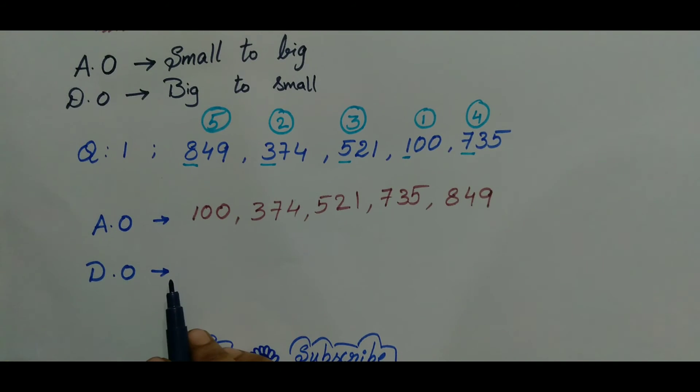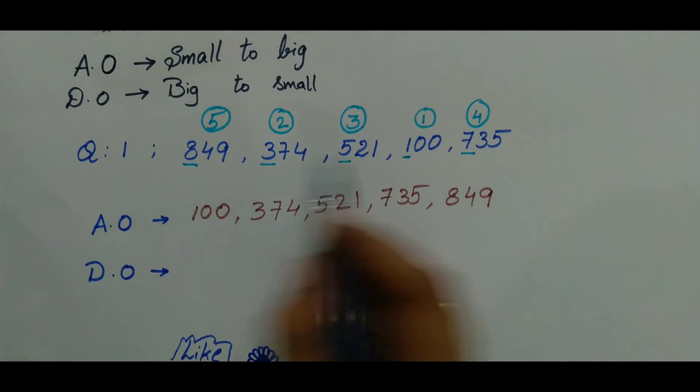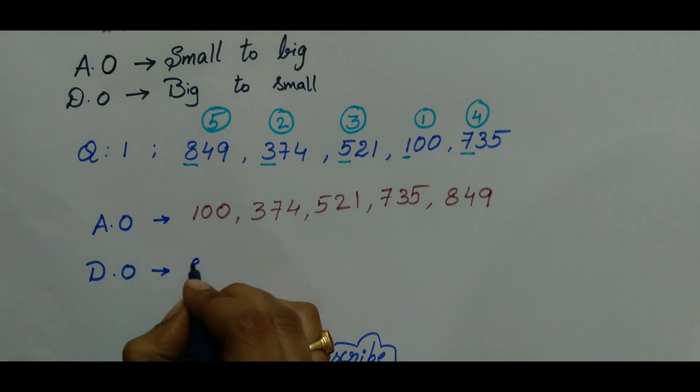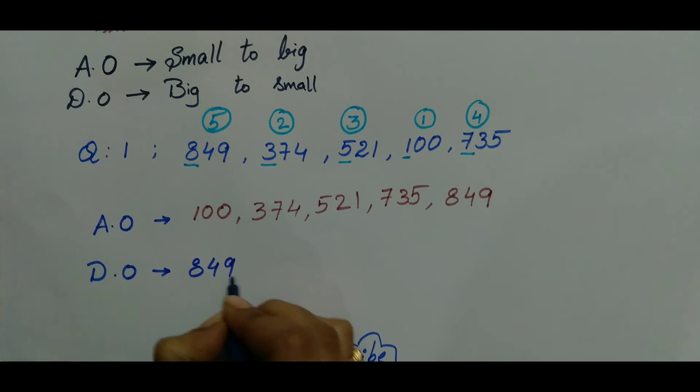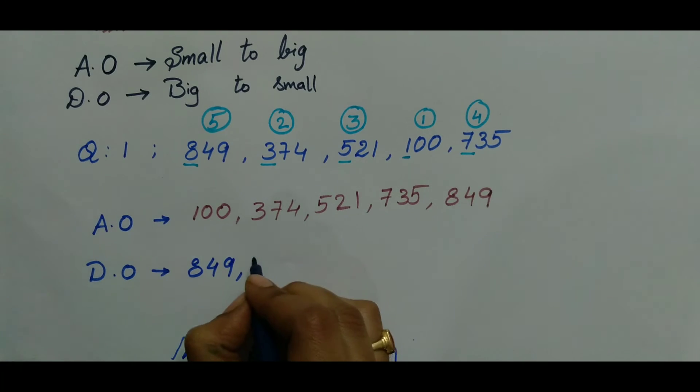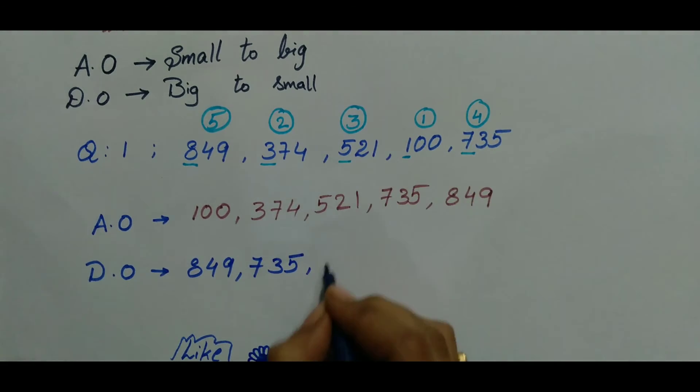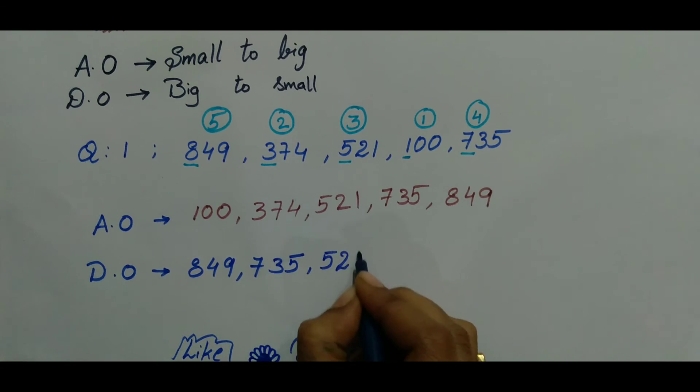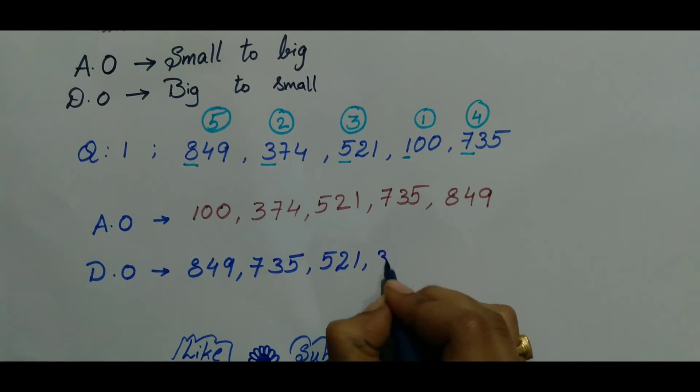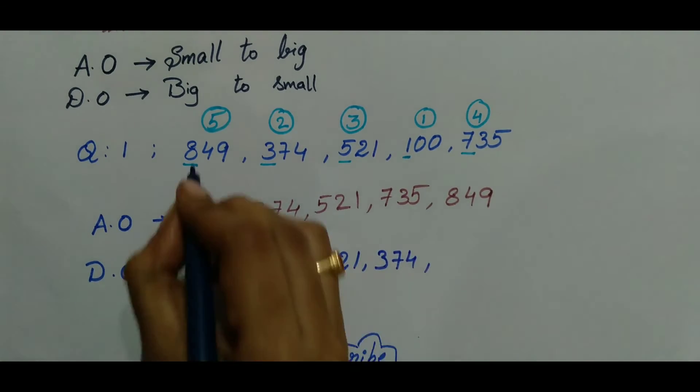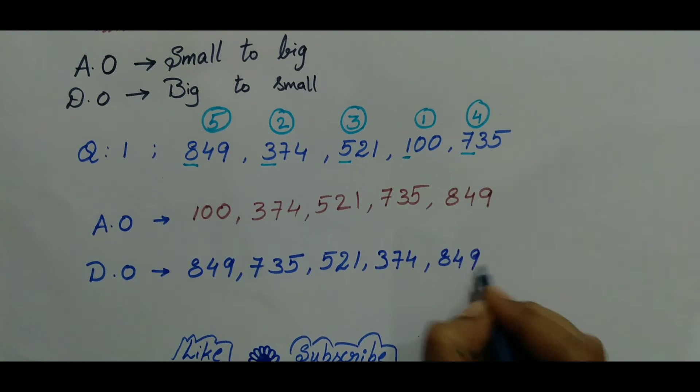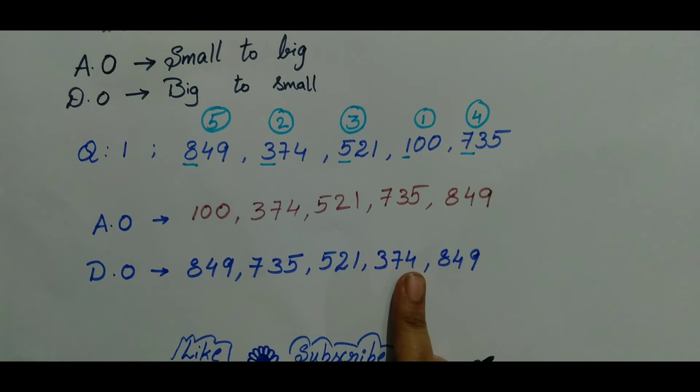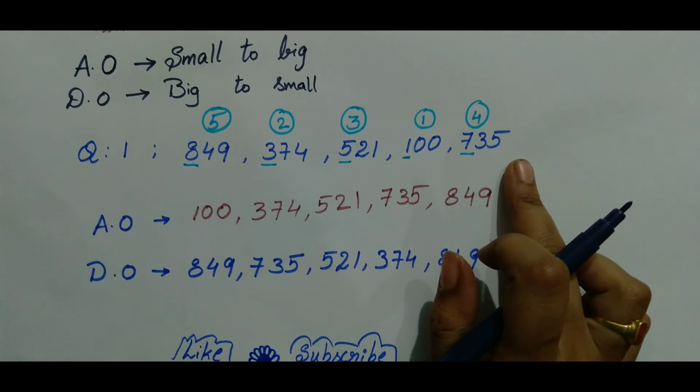Let's write descending order. Here, start from the greatest number: 849. After, the fourth position is 735. And the next one is 521. And the next, 374. After that, 849 is the required descending order from these given numbers.